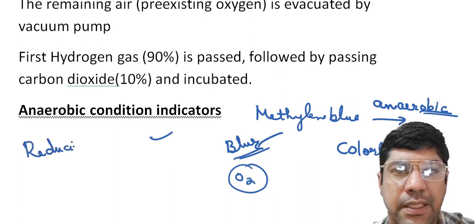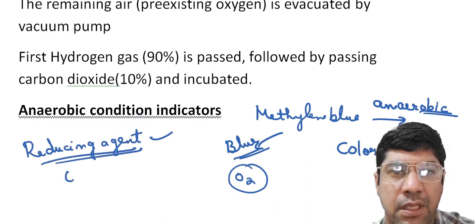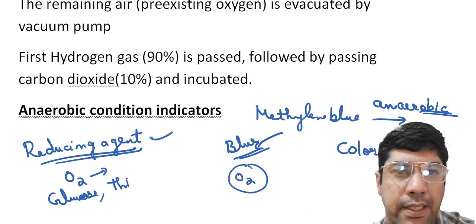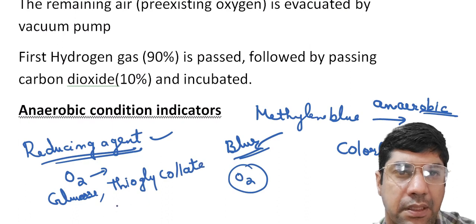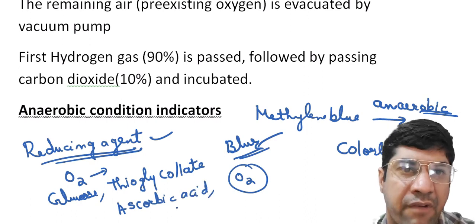Another method to create anaerobic conditions is the use of reducing agents. These are chemical substances that remove oxygen. Examples are glucose, thioglycolate, ascorbic acid, and cysteine. They help to create an oxygen-free environment.